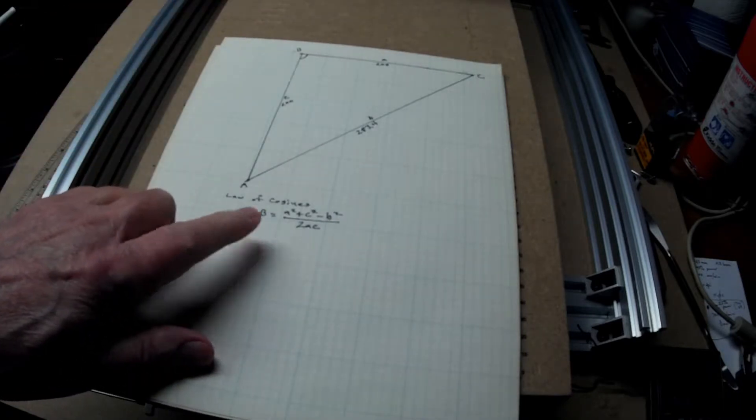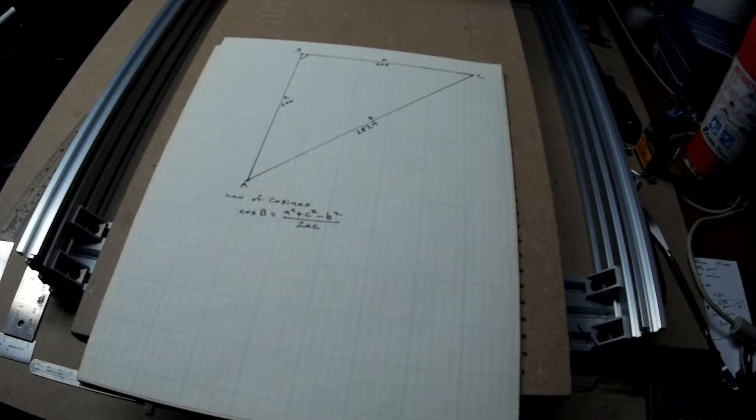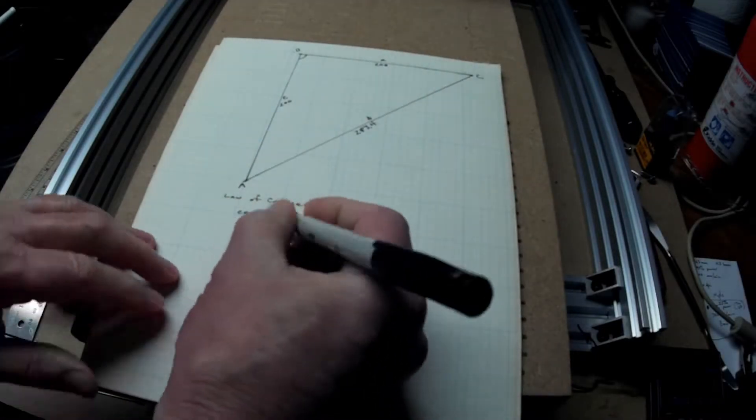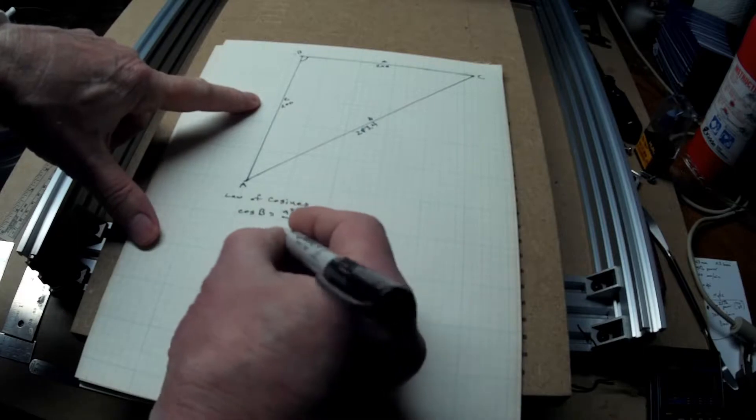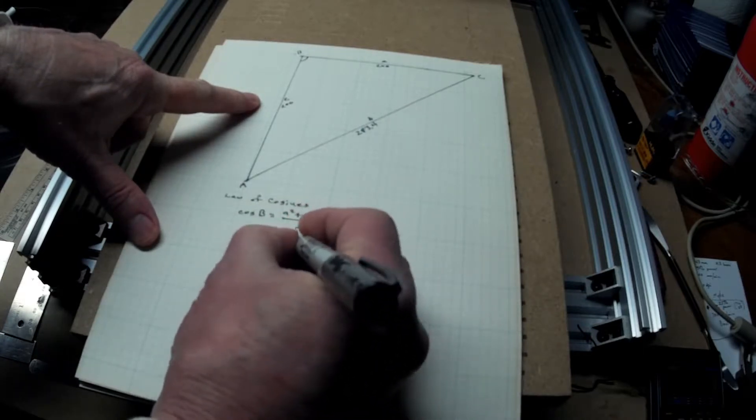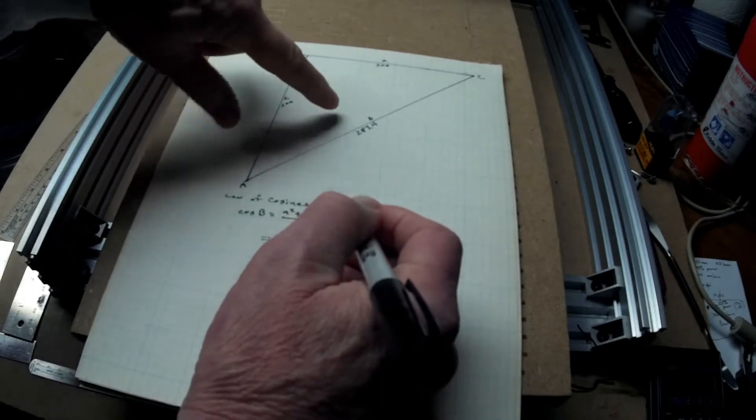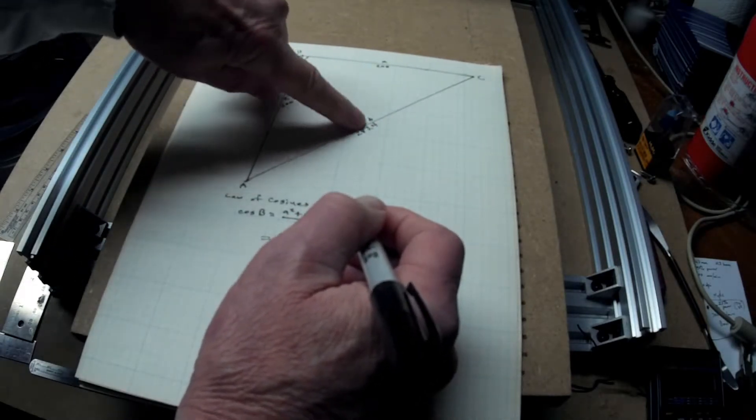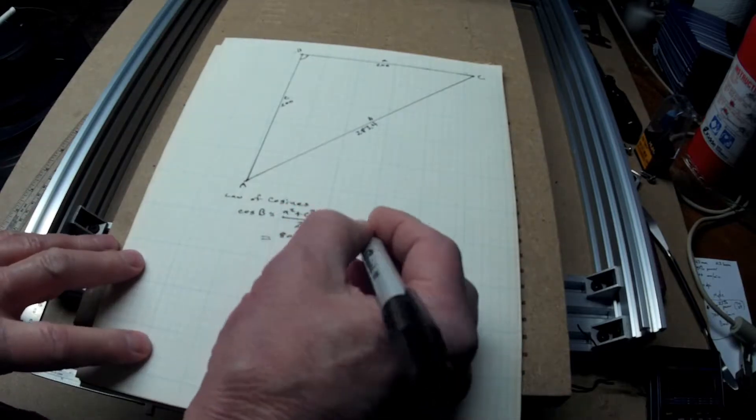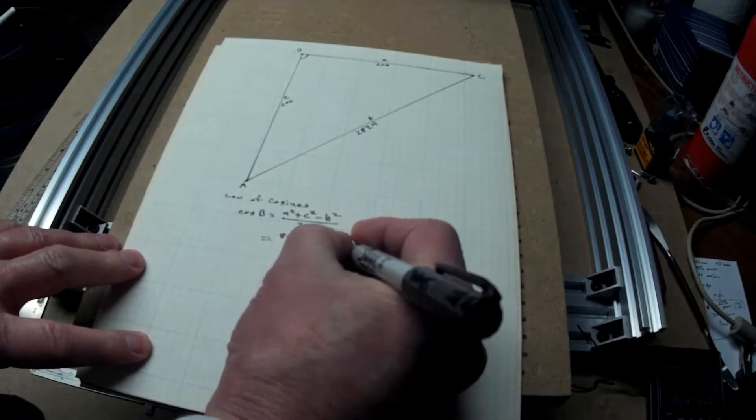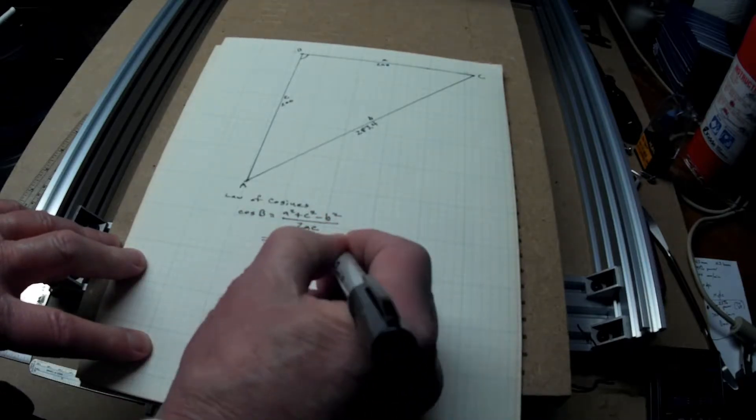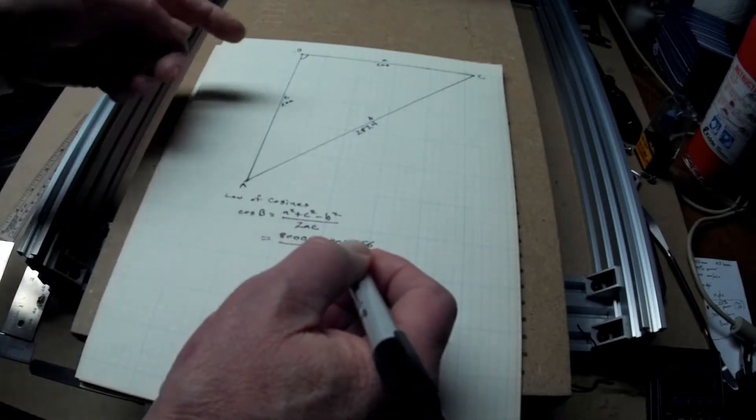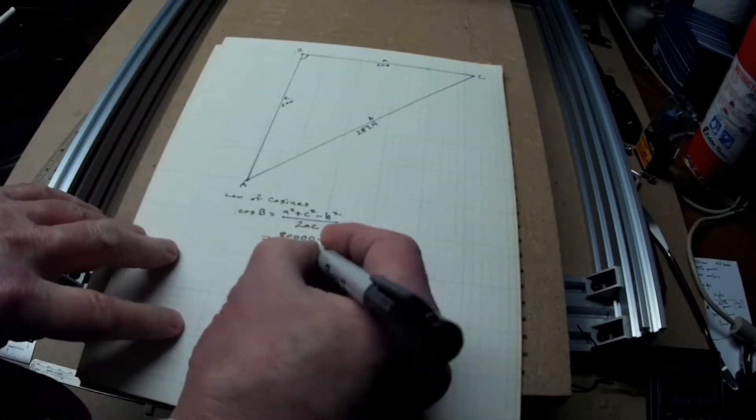Law of cosines to find this angle says the cosine of angle B is A squared plus C squared minus B squared, all over 2AC. So, that's A squared is 40,000, C squared 40,000, so that's 80,000 minus this side squared, 283.4 squared, which is 80,315.56. And that's all over 2AC. Well, AC, that's 40,000 again, times 2 is 80,000.